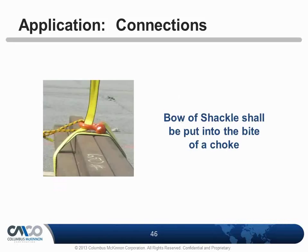When doing chokes, the bow of the shackle should be put into the bite of the choke, not the running part. A double-wrapped choke on a loose bundle is recommended for load control. Any time you're lifting loose bundles, use two points of connection with two slings and two double-wrapped chokes. Placing the bow in the bite reduces friction and avoids putting the pin in a position where it could loosen.